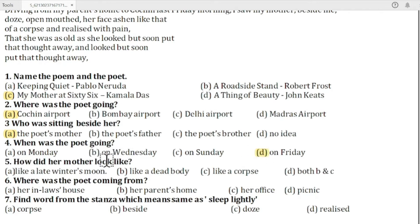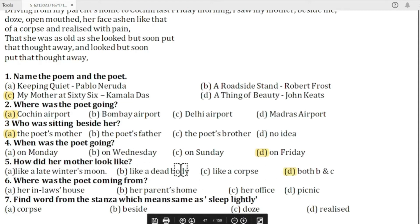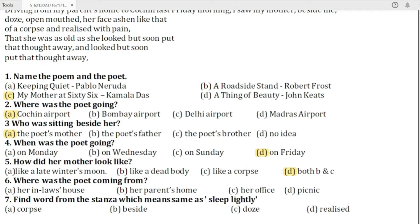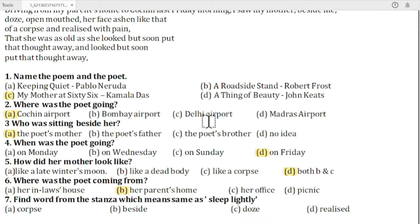Question five: how did her mother look? The answer is D — both B and C: like a dead body and like a corpse. 'Corpse' and 'dead body' mean the same thing. Question six: where was the poet going from? The answer is B — her parents' home. Question seven: find the word from the stanza which means 'sleep lightly.' The answer is C — doze.